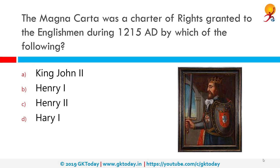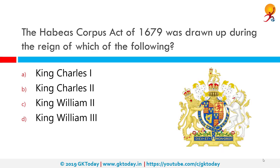The Magna Carta was a charter of rights granted to Englishmen during 1215 AD by which of the following? The correct answer is King John. Magna Carta is a Latin phrase meaning 'Great Charter.' It is the most important document of England, signed on 15 June 1215 at Runnymede alongside the River Thames in Surrey. It originated as a peace treaty between King John and a group of rebellious barons, with written promises that the king would govern England according to the customs of feudal law.